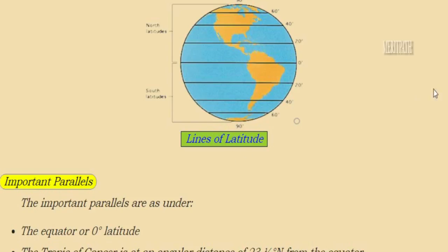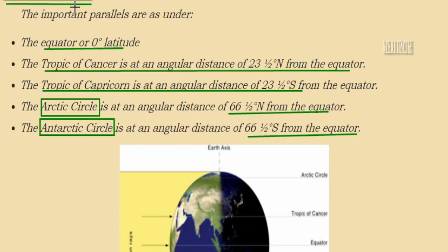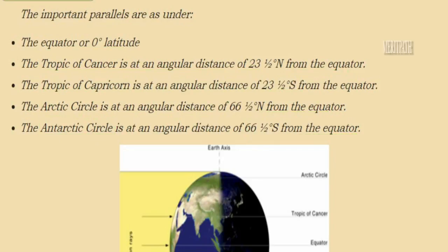The important parallel lines are: zero degrees — the equator; 23 and a half degrees north — the Tropic of Cancer; 23 and a half degrees south — the Tropic of Capricorn; 66 and a half degrees north — the Arctic Circle; and 66 and a half degrees south — the Antarctic Circle. These are the important parallels of the globe.